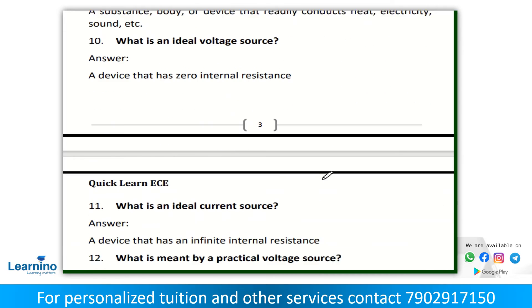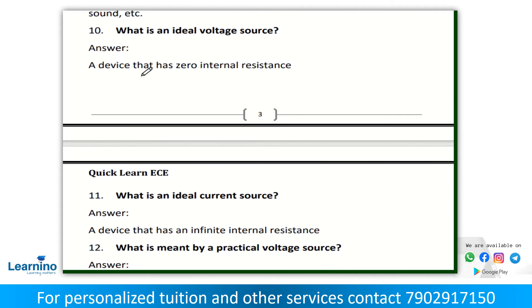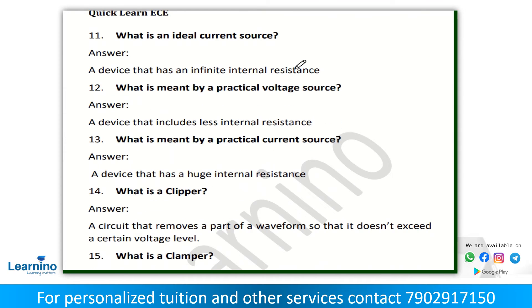Next question: what is an ideal voltage source? A device that has zero internal resistance. Next question: what is an ideal current source? A device that has an infinite internal resistance. Next: what is meant by practical voltage source? A device that includes less internal resistance.